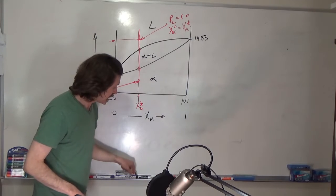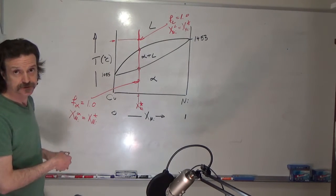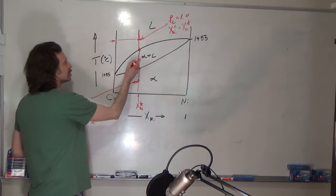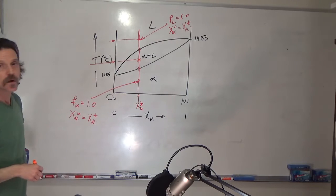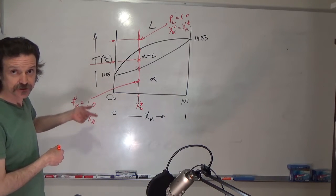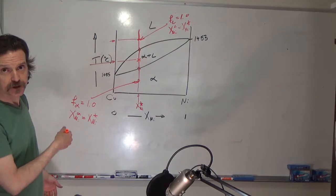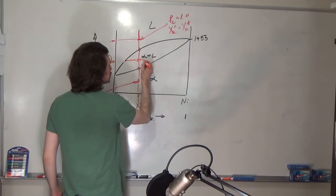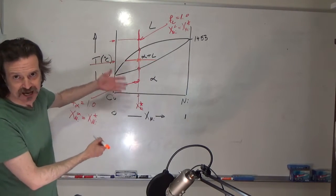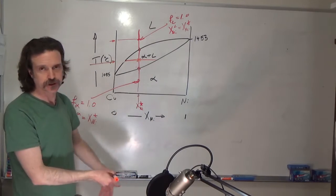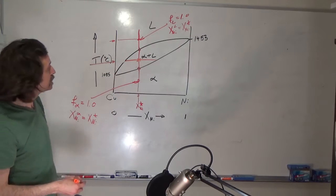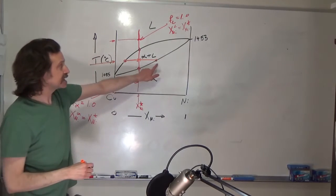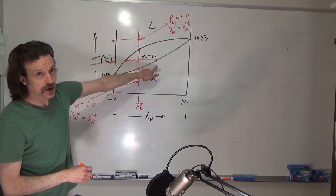Now let's say we're at a temperature between the liquidus and solidus. We can figure out the phase fraction and composition because we know how solubility lines work in phase diagrams. What we're going to do is draw a horizontal line — the nomenclature for that is called a tie line. We look at where the tie line intersects the phase boundaries, and those intersections are our solubility limits.